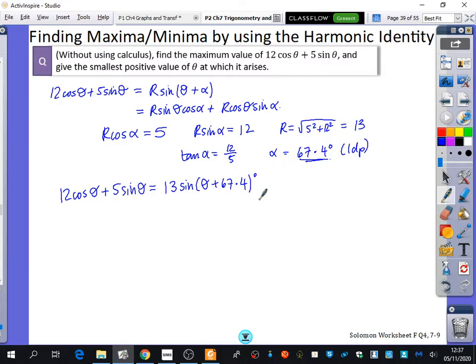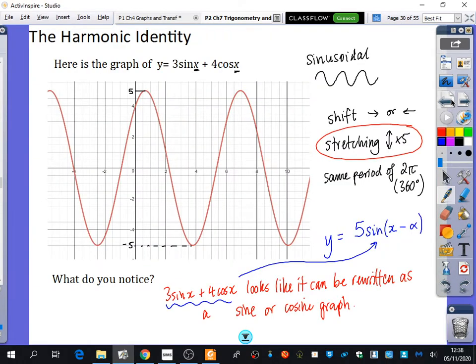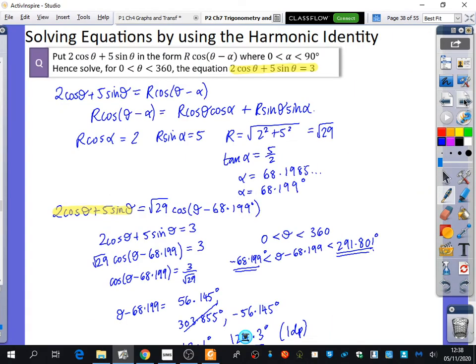So 12 cos theta plus 5 sin theta is equal to 13 sin theta plus 67.4 degrees. We've done the harmonic bit, and now we want to try and think, right back from the start of this lesson, what was the maximum values on these graphs? So what would the maximum value be on this graph? 13. It would be 13.